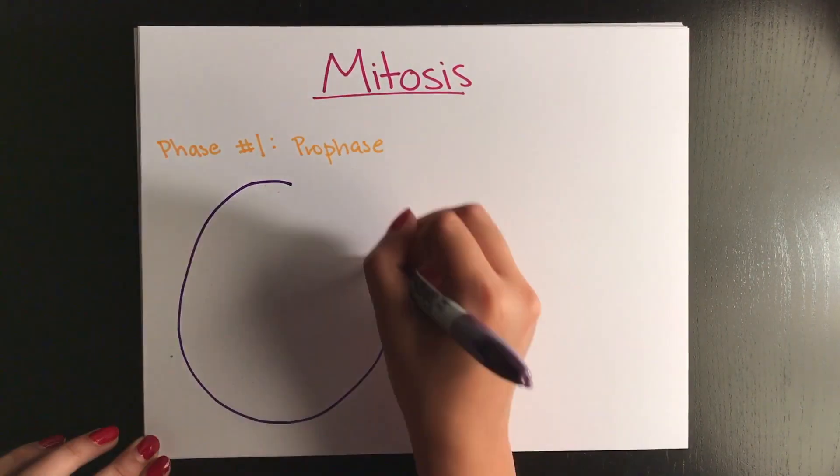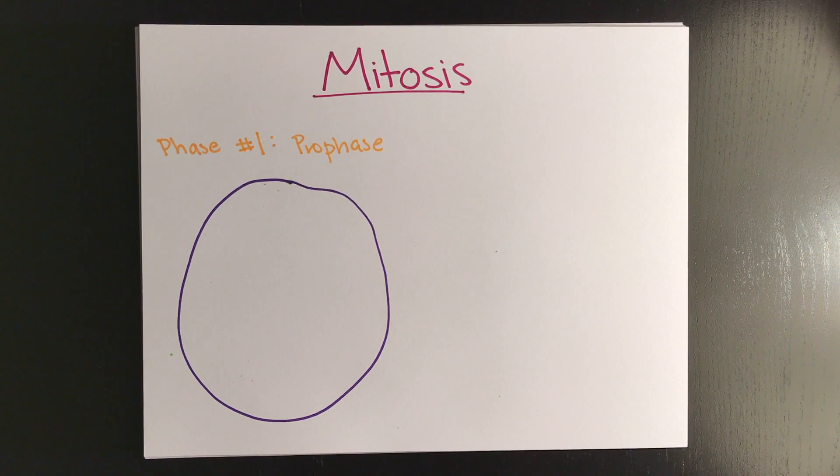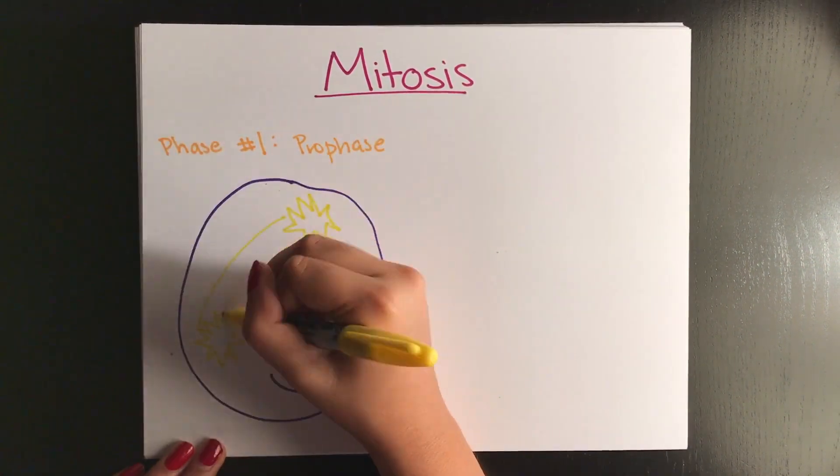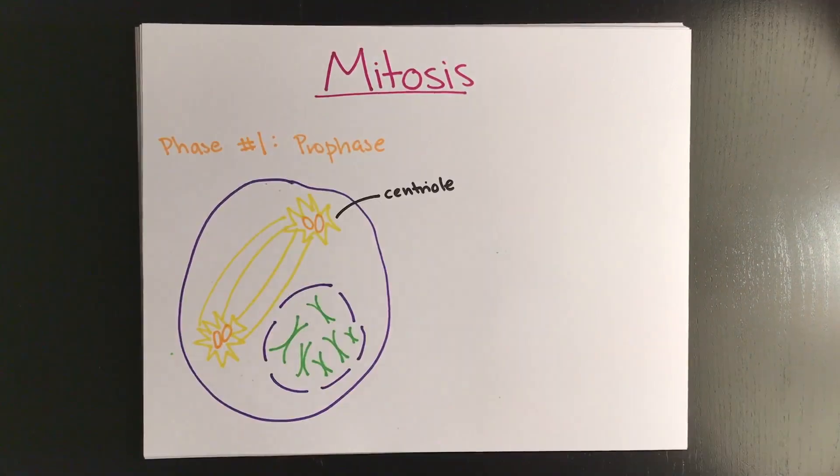Now we're going to start with mitosis. The first phase is prophase. During this step, centrioles move to opposite sides of the cell and they begin to form the mitotic spindle. The chromosomes will condense, and the nuclear membrane begins to break up.